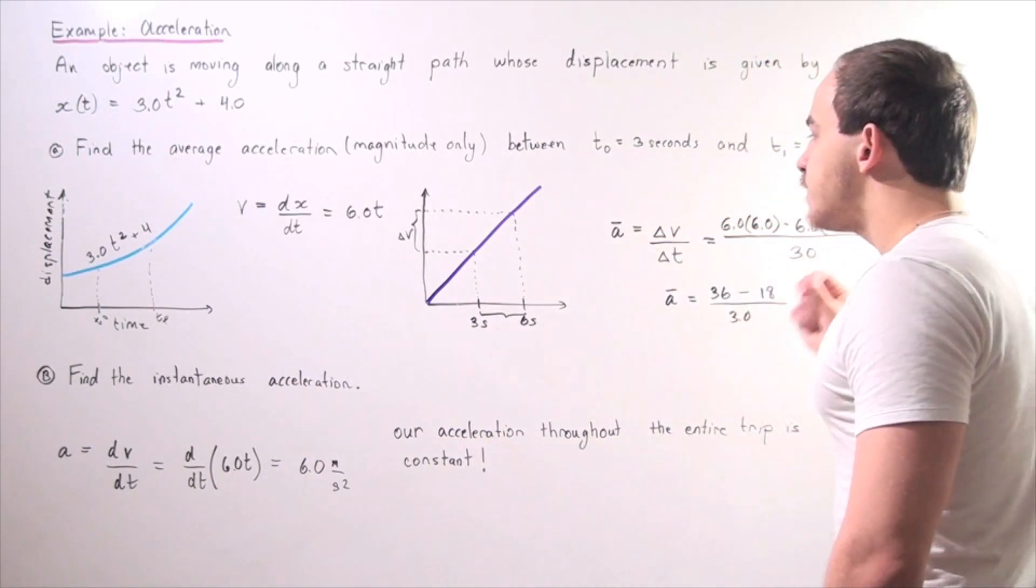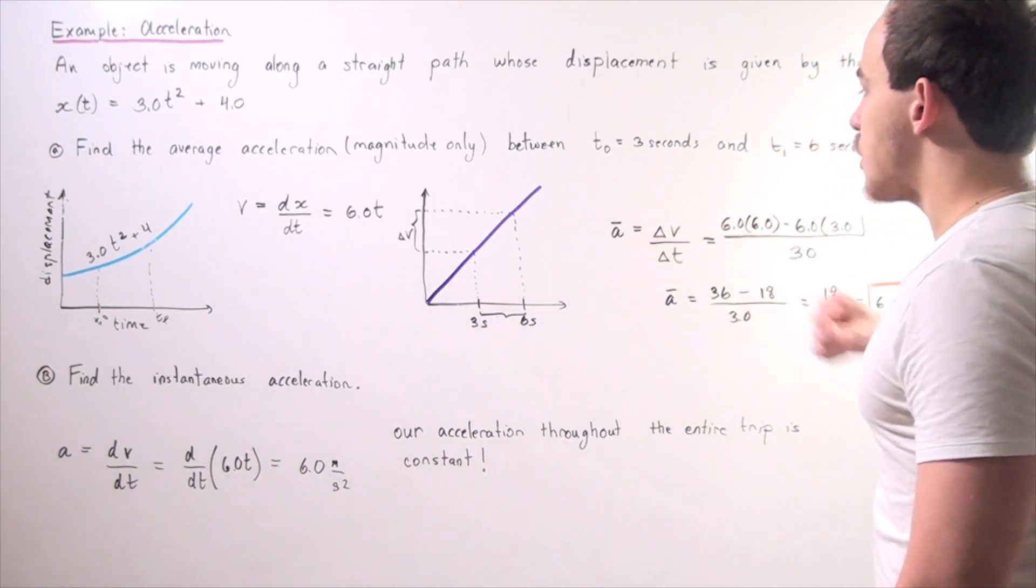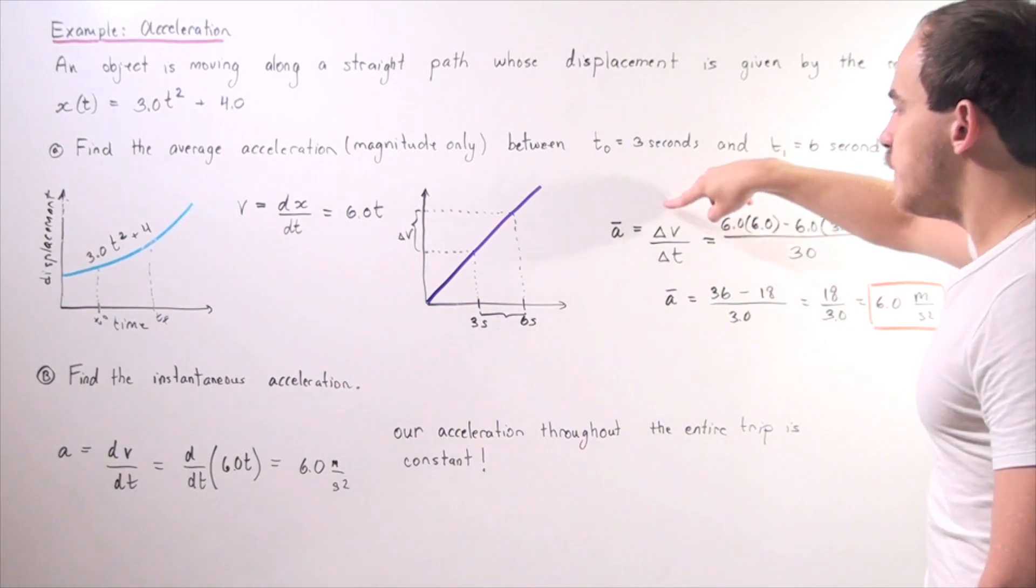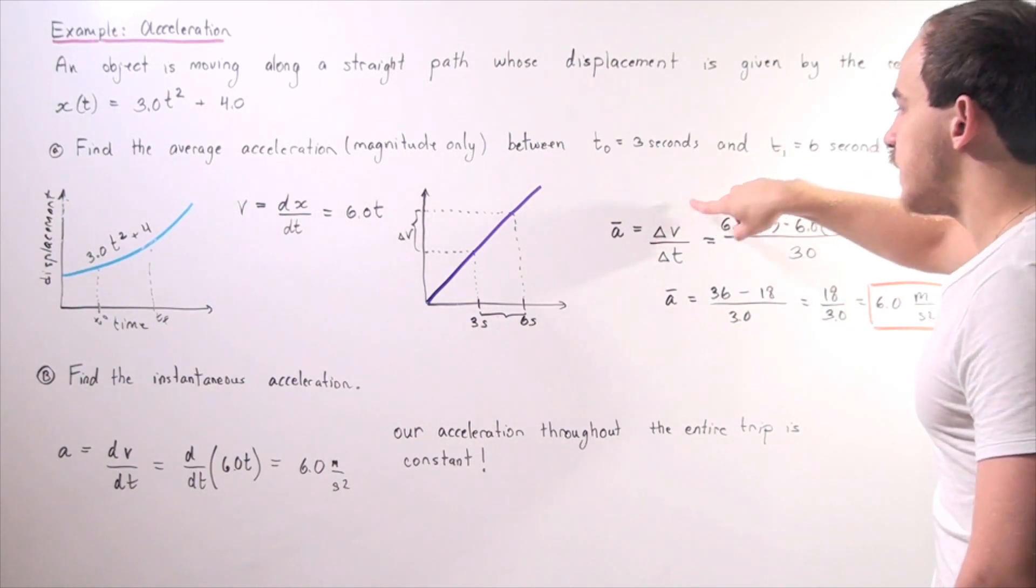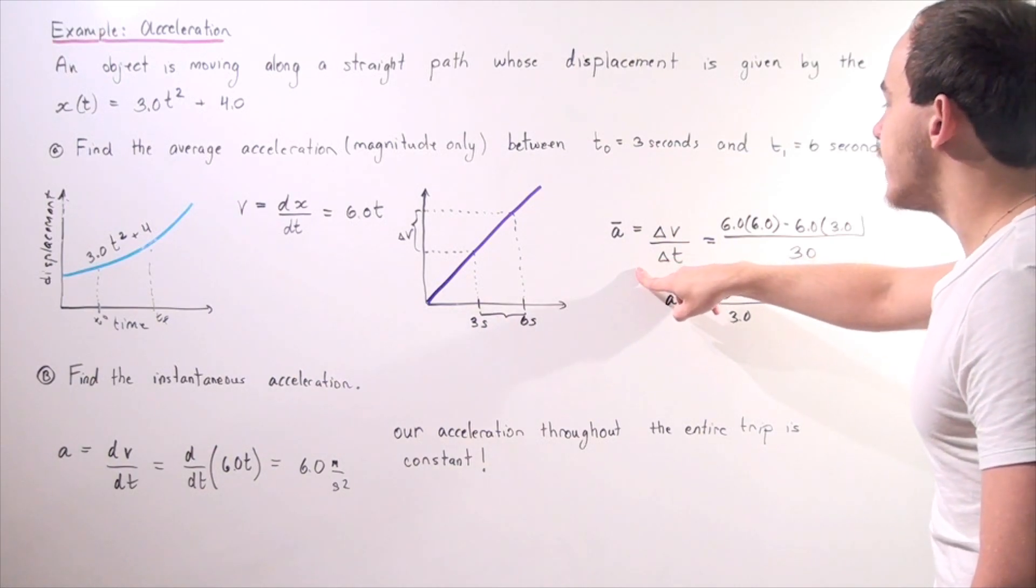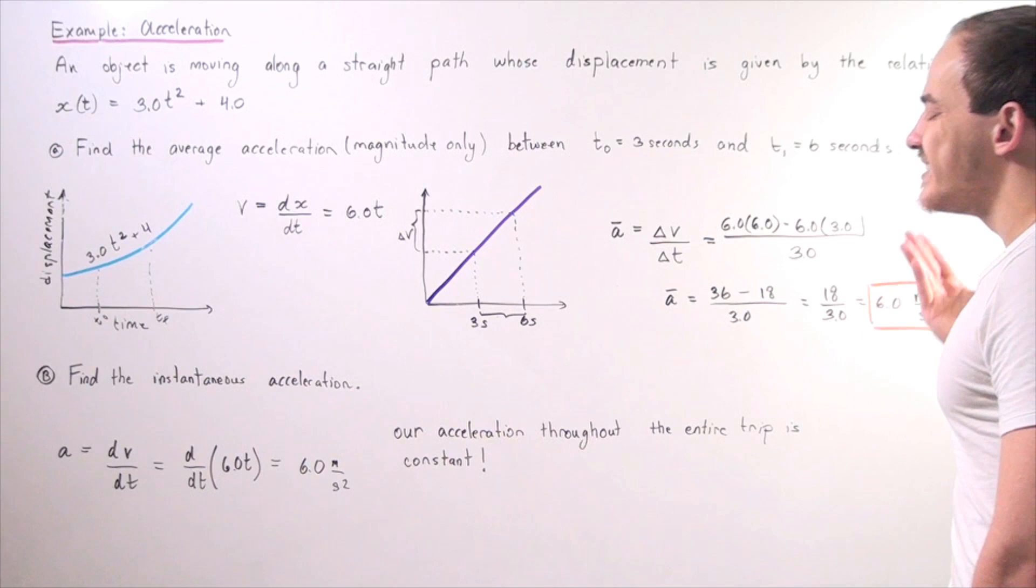So let's find our average acceleration by using our formula. Average acceleration equals change in velocity divided by change in time: (v_final - v_initial)/(t_final - t_initial). We know that t_final minus t_initial, 6 minus 3, is 3.0 seconds.